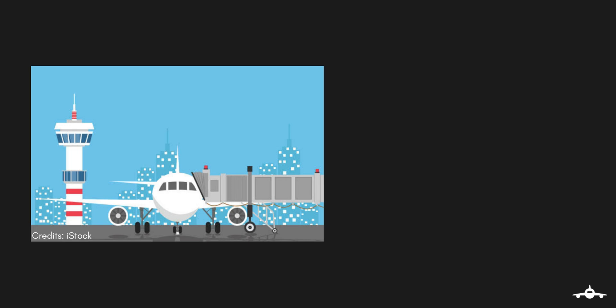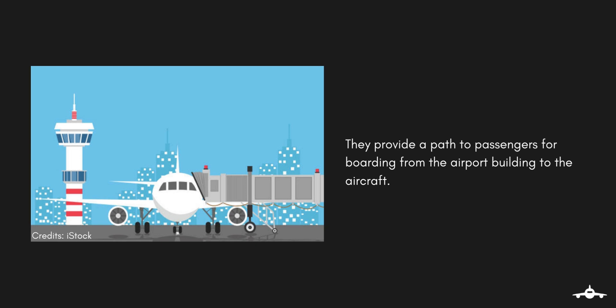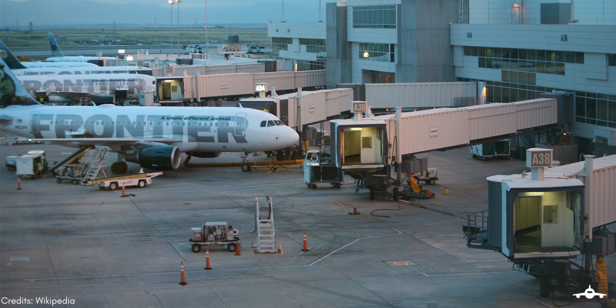A passenger boarding bridge is a mobile structure that adjusts itself with different aircraft. It provides a path to passengers for boarding from the airport building to the aircraft. If you have ever noticed on the boarding pass for a flight, there is a specific gate number for that particular flight. This gate number corresponds to a specific passenger lounge that is connected through the passenger boarding bridge to the aircraft.